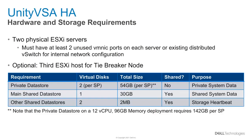To deploy Unity VSA HA, two physical ESXi servers should be made available for proper redundancy, and both servers must have at least two unused VM NIC ports or must have an existing distributed V switch for internal network configuration. A third ESXi host would be recommended if you'd like to deploy the optional tiebreaker node. For storage requirements, Unity VSA HA deploys a number of virtual disks which should be provisioned from reliable and independent storage locations, providing higher resiliency from potential outages.